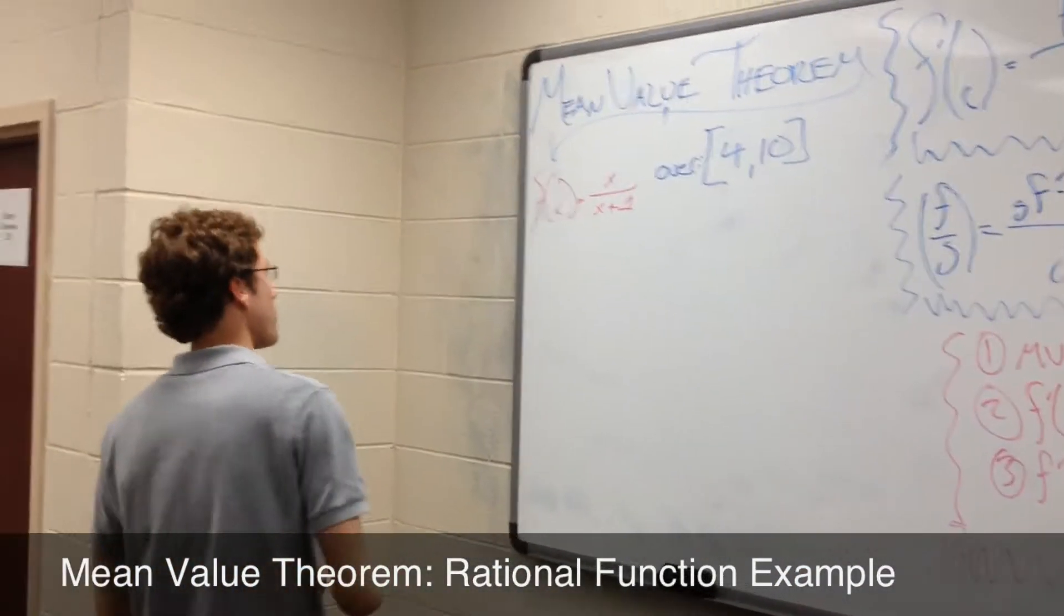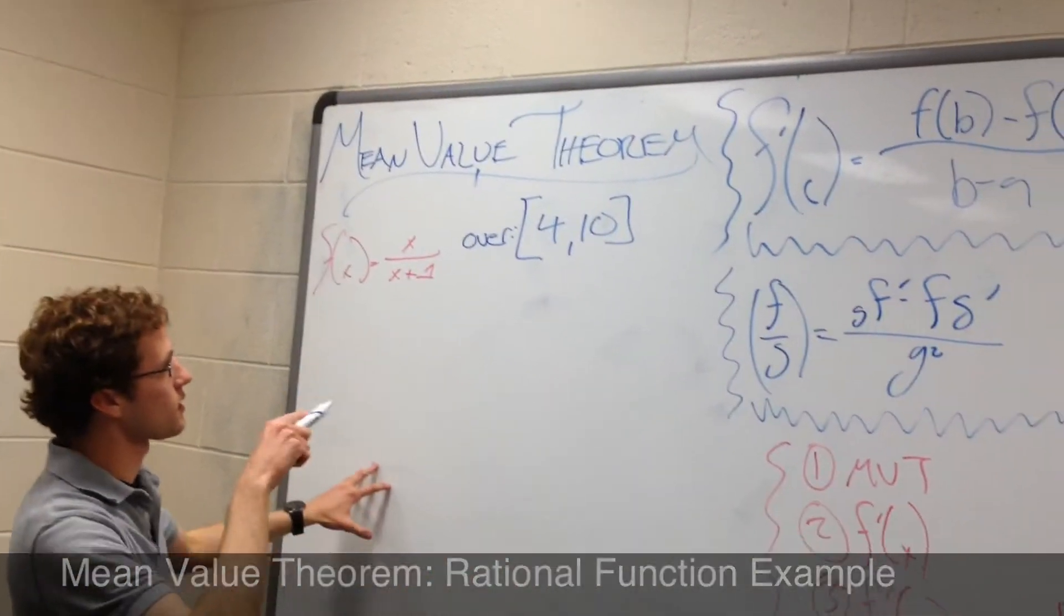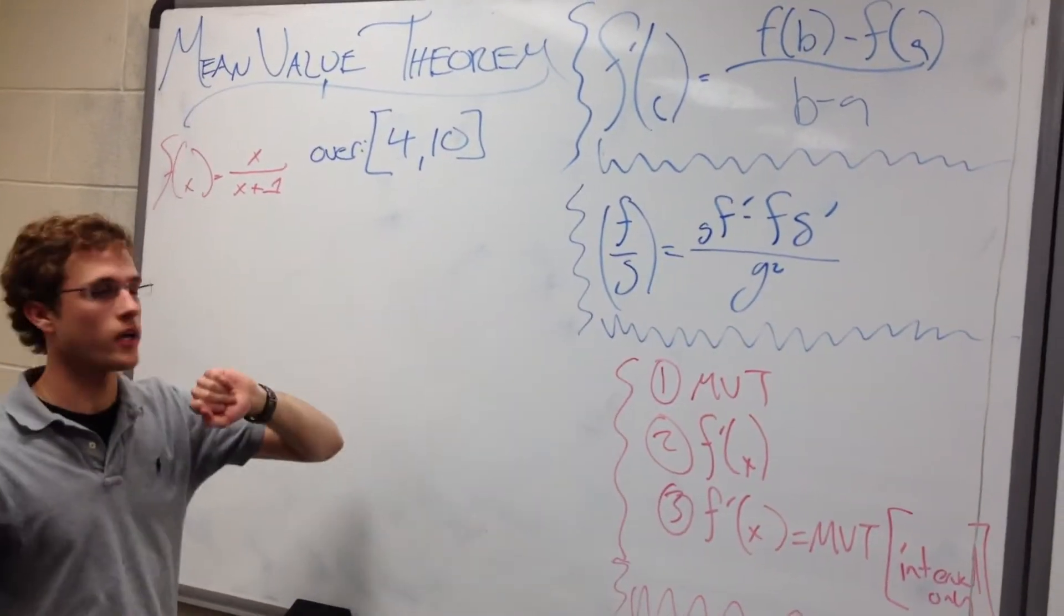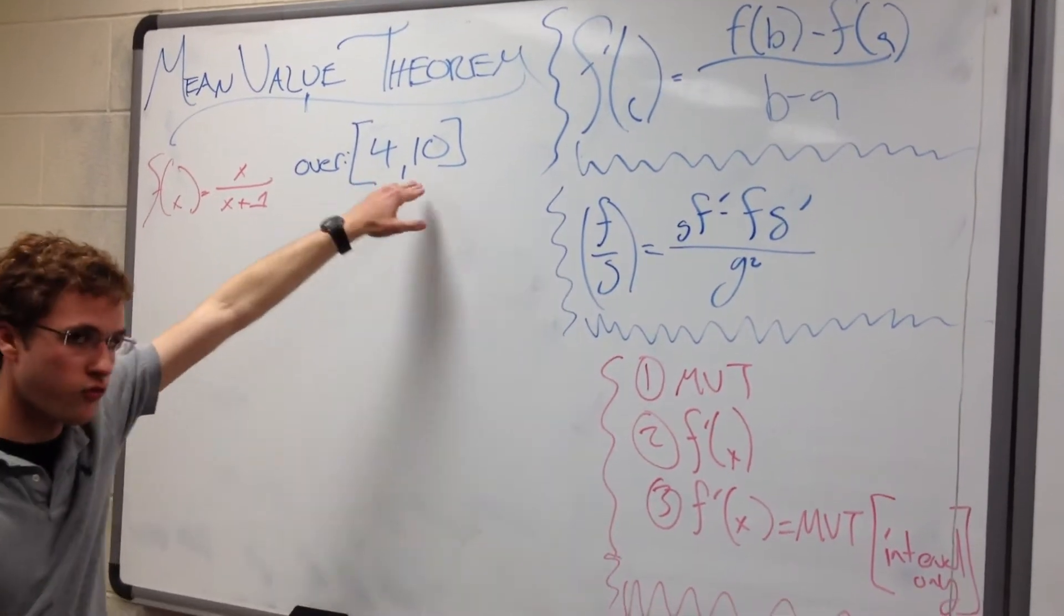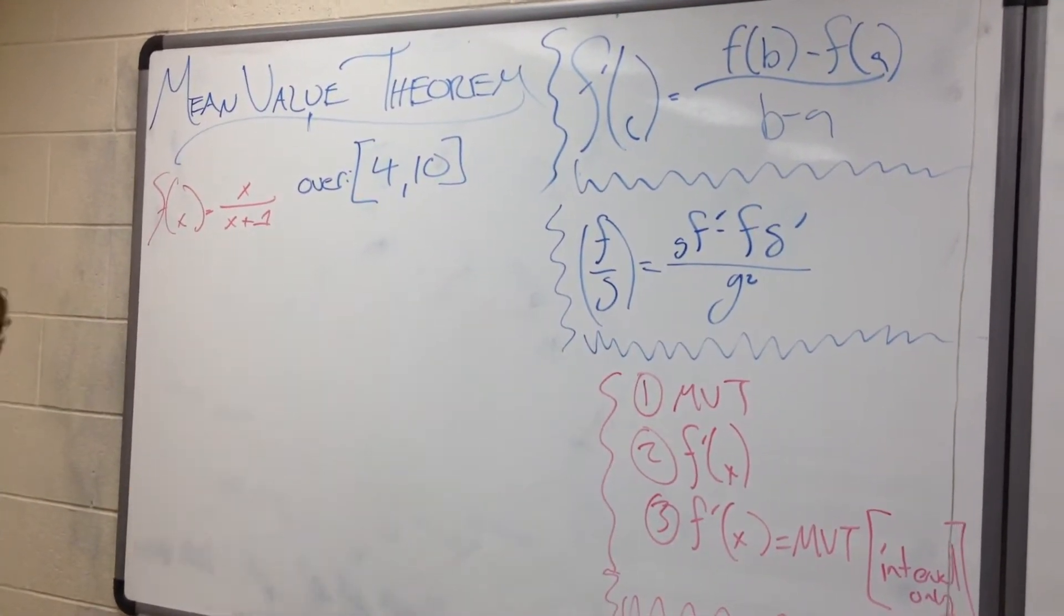let's do another example of the mean value theorem, using it to evaluate a function and approximate its value over a certain interval. And we're going to use the interval 4, 10 for the function f of x equals x over x plus 1.